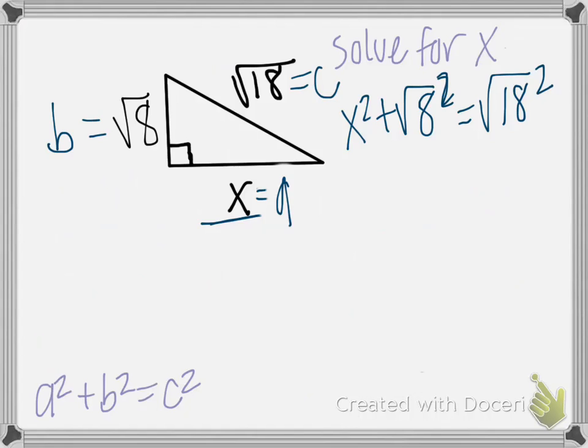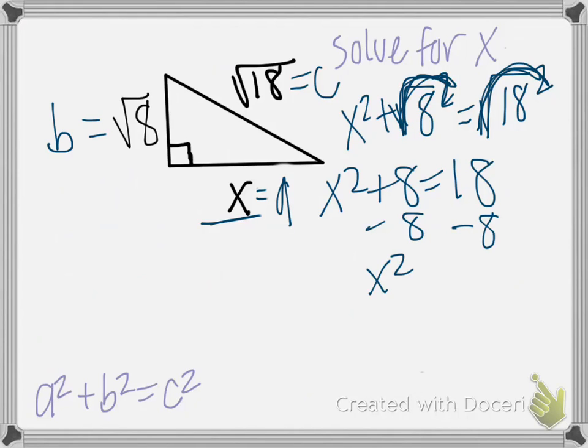Now, if you square a square root, they cancel out. They are no longer there. So that leaves us with X squared plus 8 equals 18. Subtract 8 from both sides, and we have X squared equals 10. Now we need to square root both sides, and we have X equals the square root of 10. And that is as simple as we can get it.